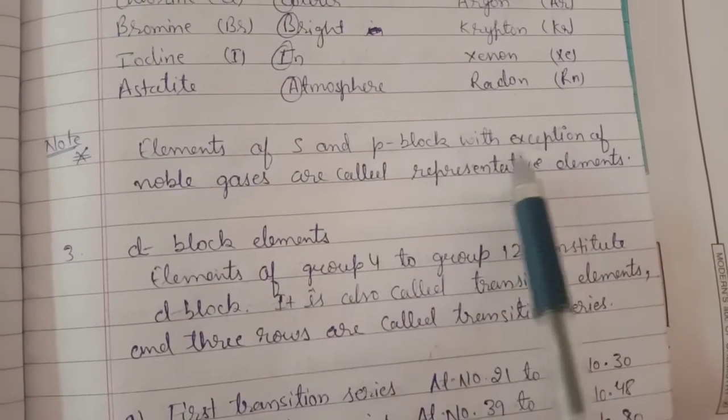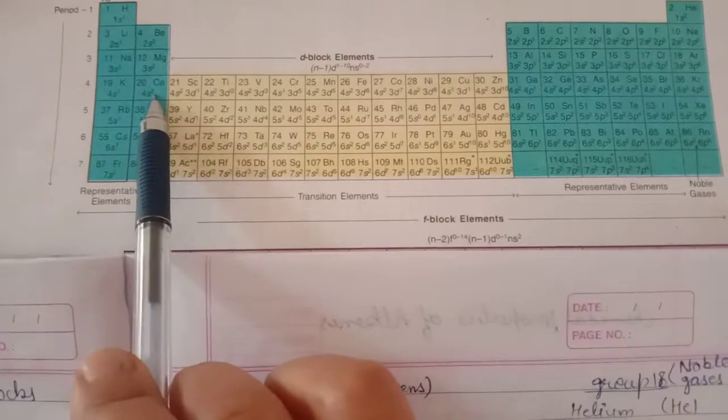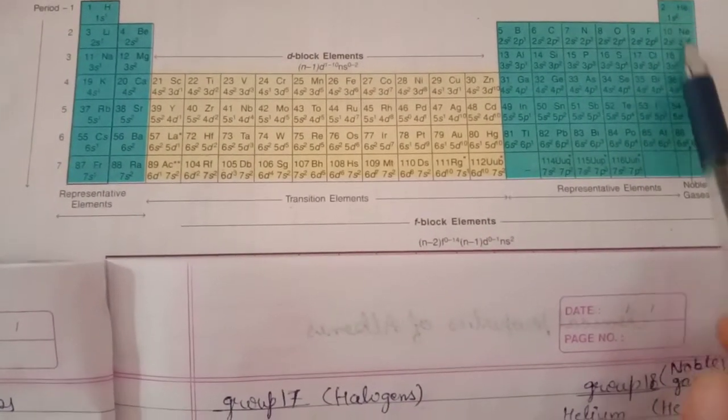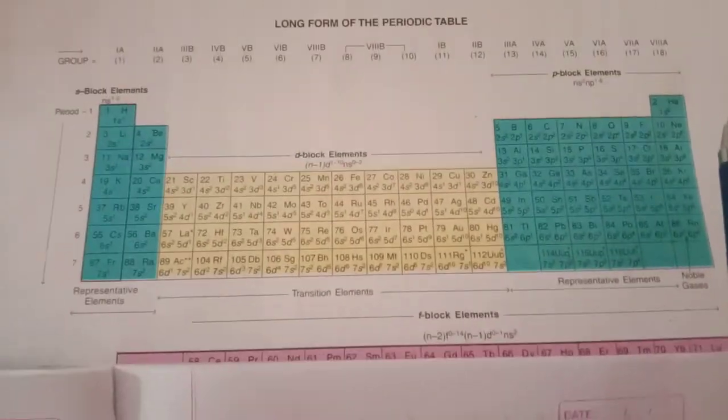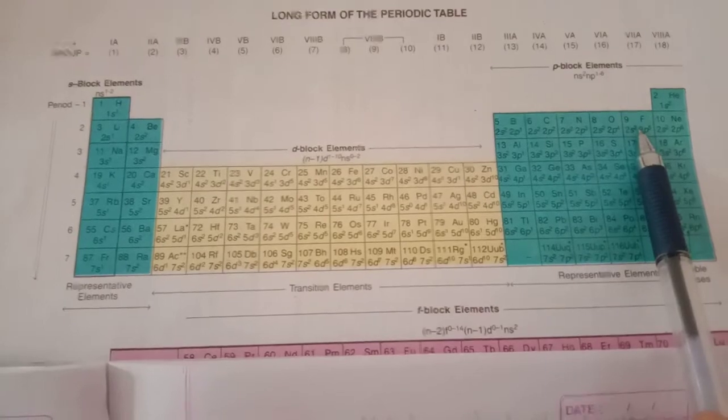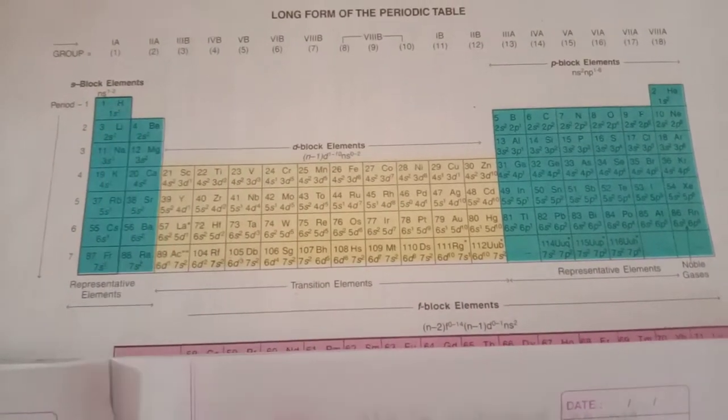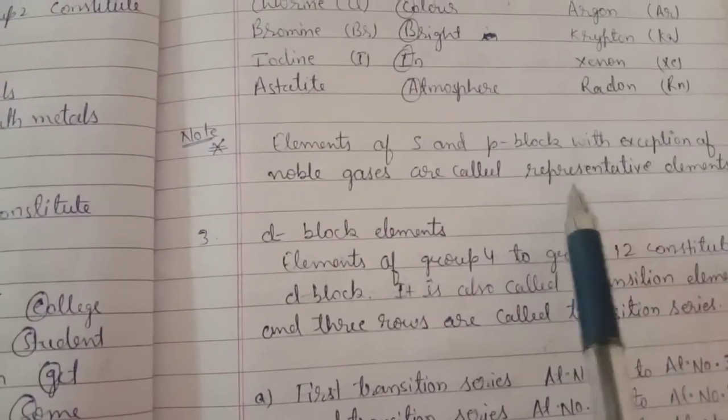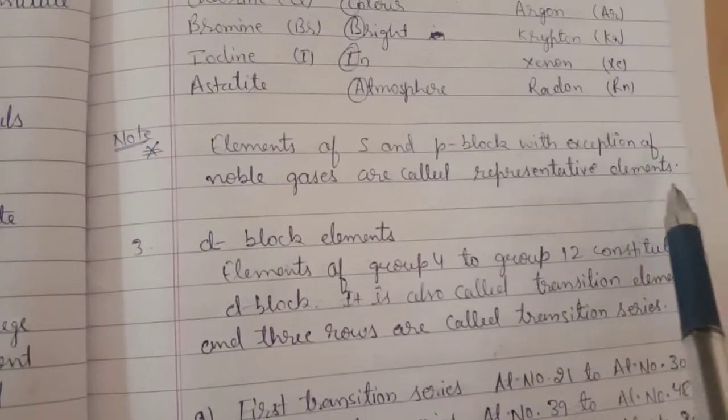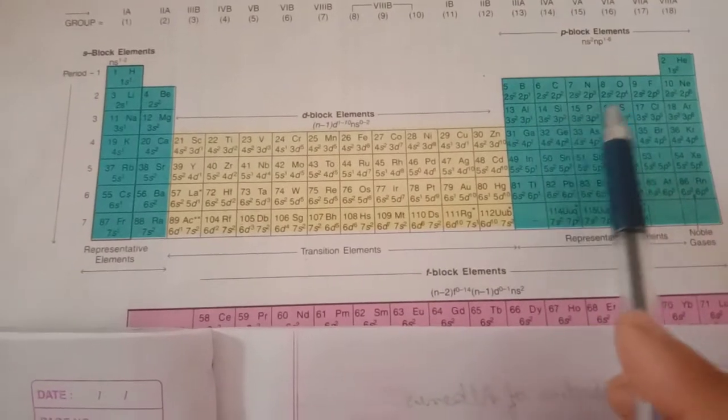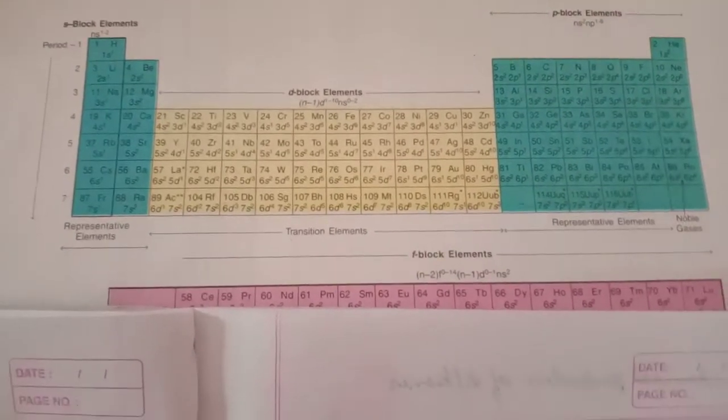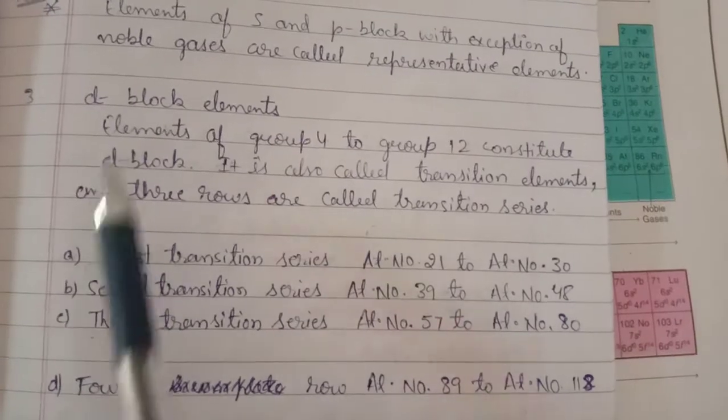Elements of S and P block, with the exception of noble gases - both groups of S block and the P block groups, excluding group 18 - the P block goes from group 13 to 18, but groups 13 to 17, along with S block groups 1 and 2, together are called representative elements. If you're asked what are the representative elements, you would say groups 1, 2, 13, 14, 15, 16, and 17.